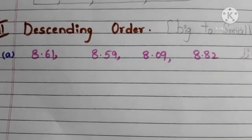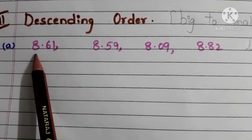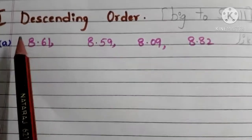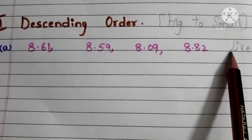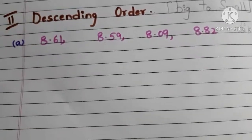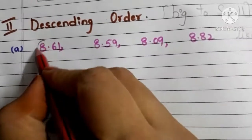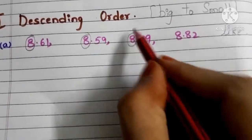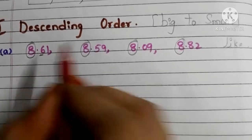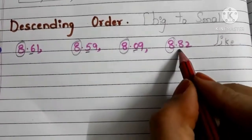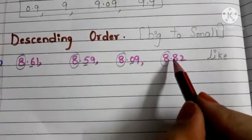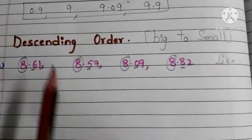Now let us go to descending order. Here our first example is 8.61, 8.59, 8.09, and 8.82. By observing these decimals we can easily say that these are like decimals. Now we have to find which one is the bigger number. First compare the whole number parts — all are 8, so compare the 10th digits: 6, 5, 0, and 8. See, 8 is bigger, so 8.82 is the biggest number among these numbers.